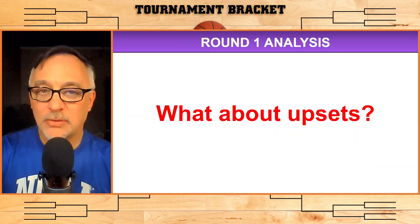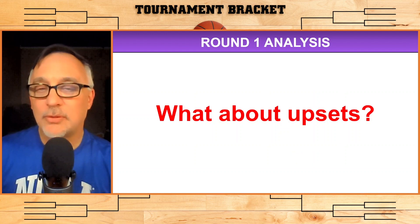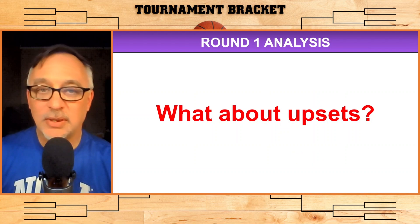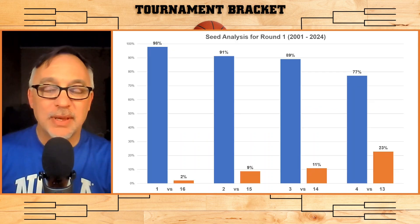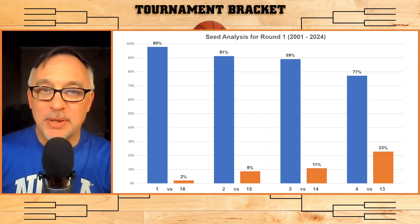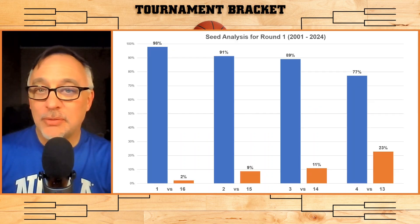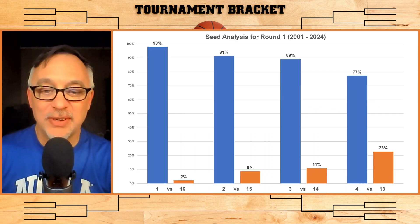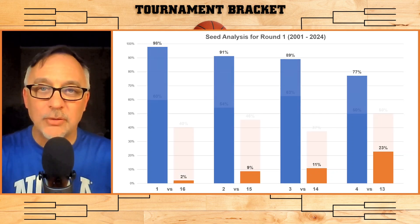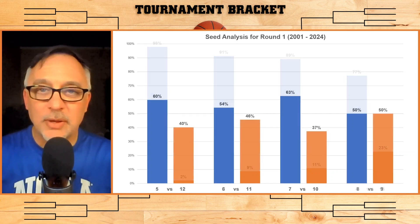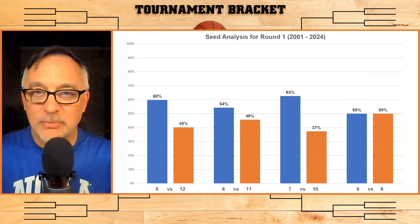Now, how do we pick upsets? We're going to focus on five versus 12, six versus 11, seven versus 10, and eight versus nine. I'm not going to pick against a one, two, three, or four seed — I'm just not going to do it, and I don't think many people can correctly pick a 13 over a four. So our upsets are going to come from the nine through 12 seeds. We'll use KenPom stats here: 'L' means lower seed — that's a nine, 10, 11, or 12 — and 'H' means higher seed, so an eight, seven, six, or five.